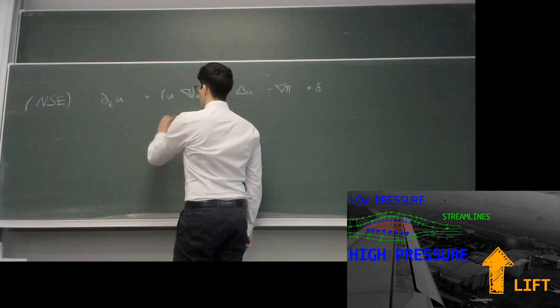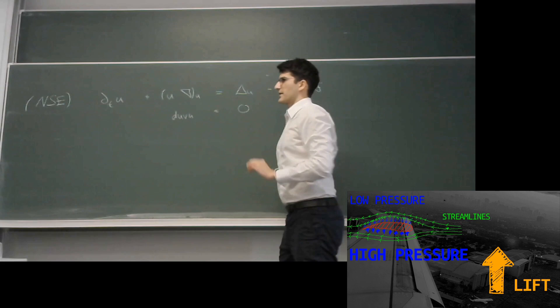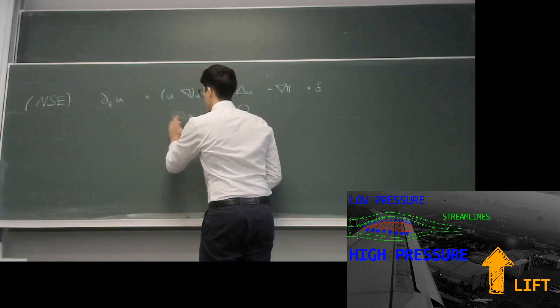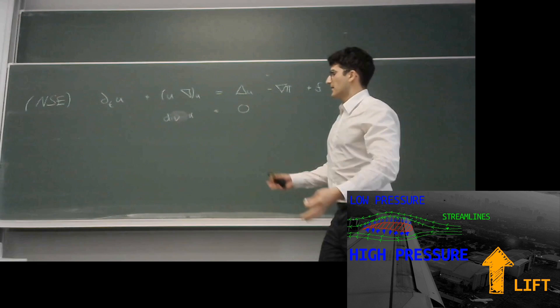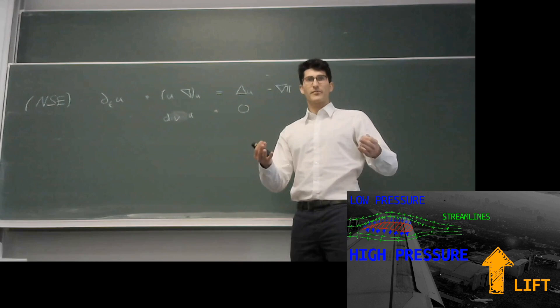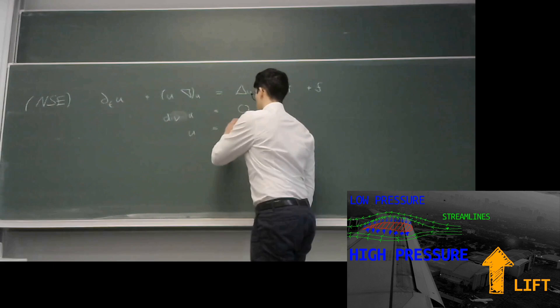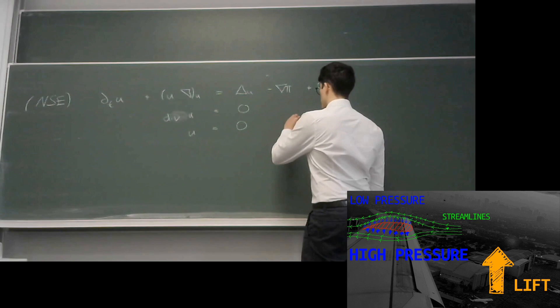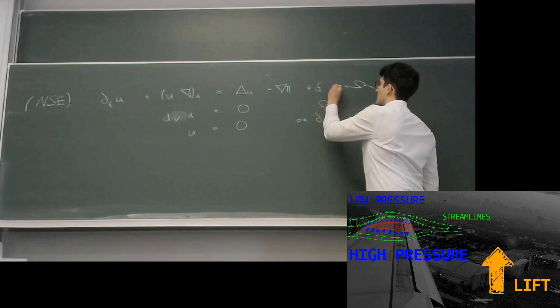Furthermore, in regimes like this — or also if you think about liquids flowing around — there is another condition called incompressibility, which tells us that the divergence of our velocity field equals zero. We also have boundary conditions: if we consider a bounded volume where the flow occurs, sometimes we assume the fluid sticks to a wall, which amounts to a Dirichlet condition on our domain omega.